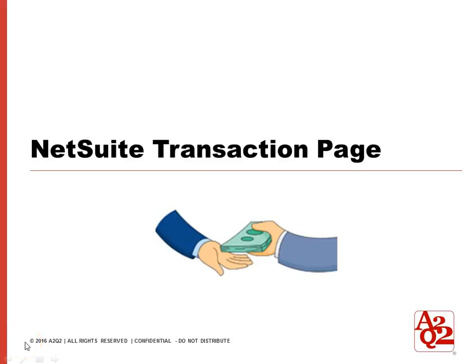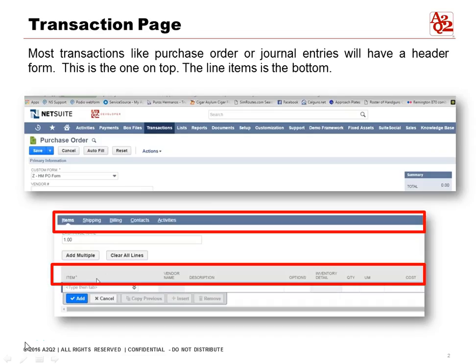Let's talk about the transaction page in NetSuite and what tips we can use to be efficient here. Most transactions, like purchase orders or journal entries, will have a header form — this is the one on top that's highlighted there. The line items are in the bottom.